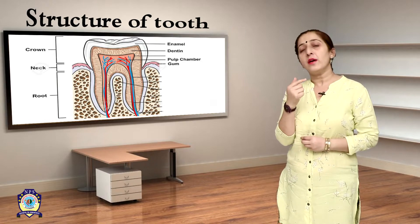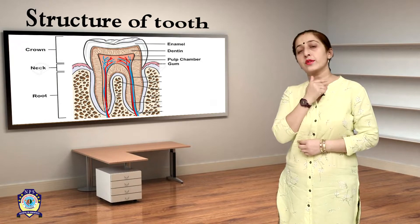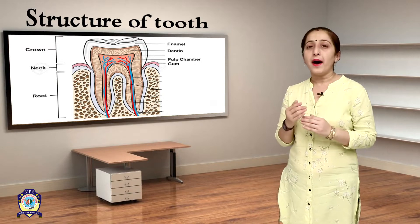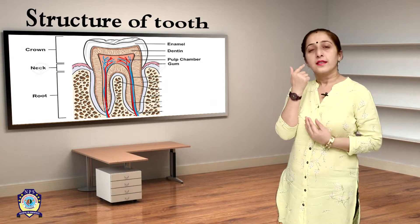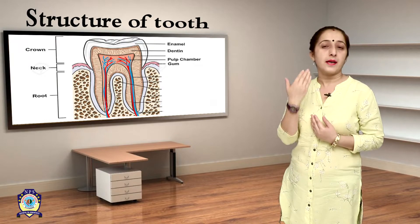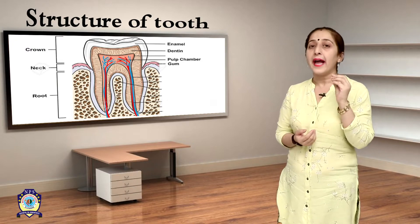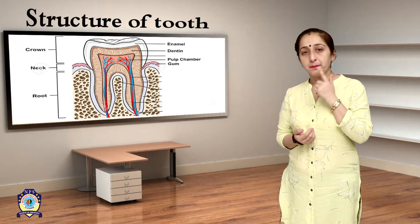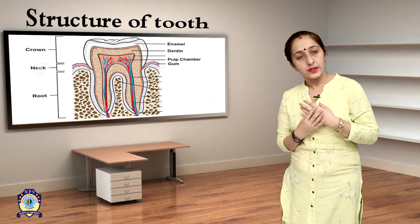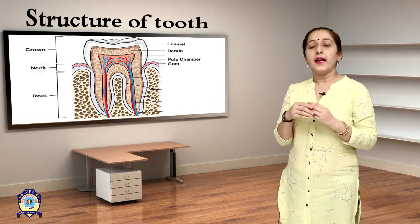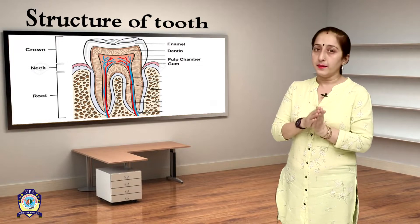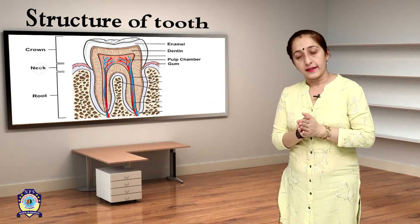We will discuss our teeth, their structure and how they are made. The part which is visible to us is called the crown.